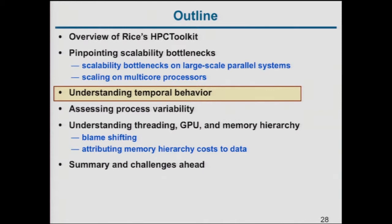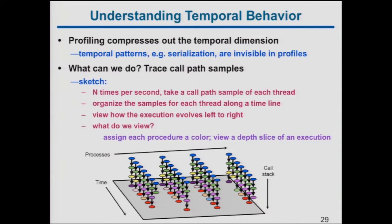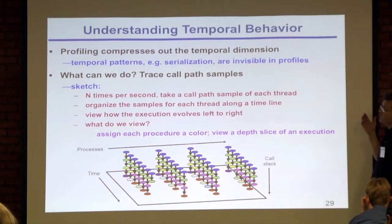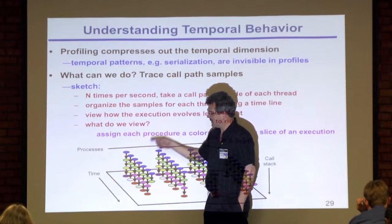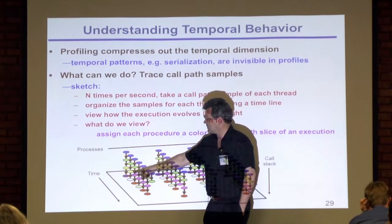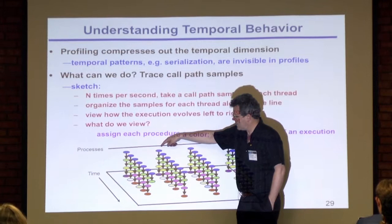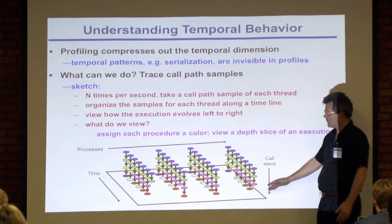Another thing we do is use sampling to understand behavior over time. This is very different from tracing that adds instrumentation to every MPI call or function. We're tracing call path samples — at each interrupt we collect a call chain for a process, and then the next time interval we collect another, building up a series of call chains over time for every thread in the application.